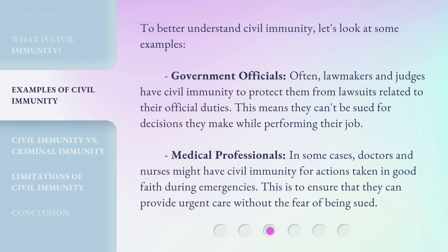To better understand civil immunity, let's look at some examples. Government officials: often, lawmakers and judges have civil immunity to protect them from lawsuits related to their official duties. This means they can't be sued for decisions they make while performing their job.